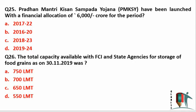Question 25: Pradhan Mantri Kisan Sampada Yojana (PMKSY) has been launched with a financial outlay of 6,000 crore. For which period has it been launched? The answer is 2016-20 — it has been launched for this period only.